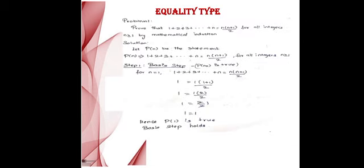Here we will see one problem of the equality type. The problem is to prove that 1 + 2 + 3 + ... + n = n(n+1)/2 for all integers n ≥ 1 by mathematical induction. We assume the statement to be P(n), and in Step 1, the basis step, P(n₀) is true. Since my initial condition is n = 1, I will be proving this for n = 1. When substituting n = 1, I take only the first term on the left-hand side, and substituting n = 1 on the right-hand side, I get LHS = RHS. So P(1) is true and the basis step holds.